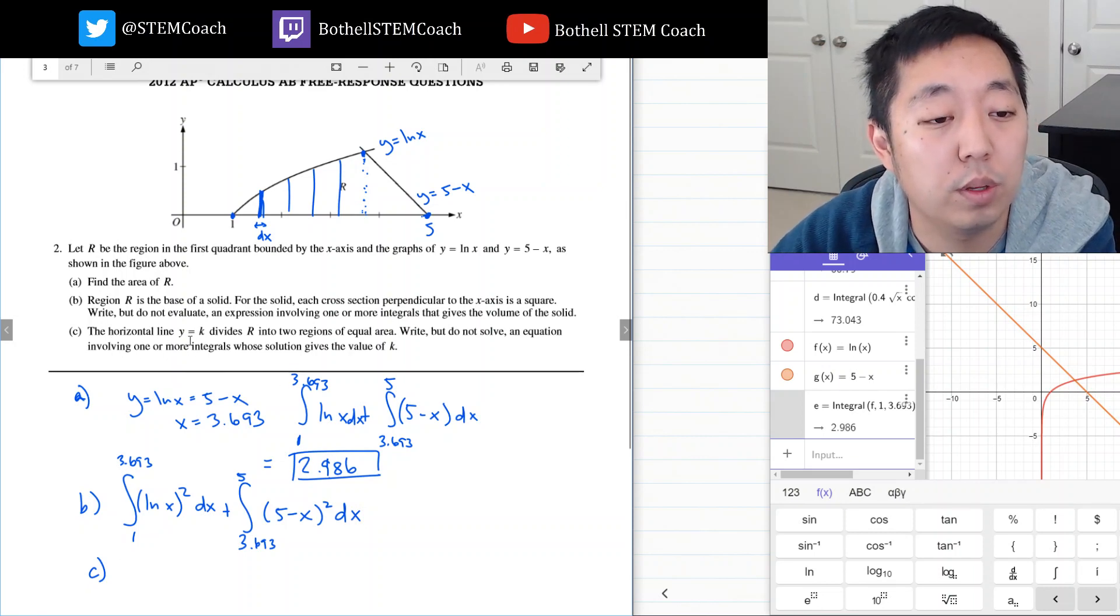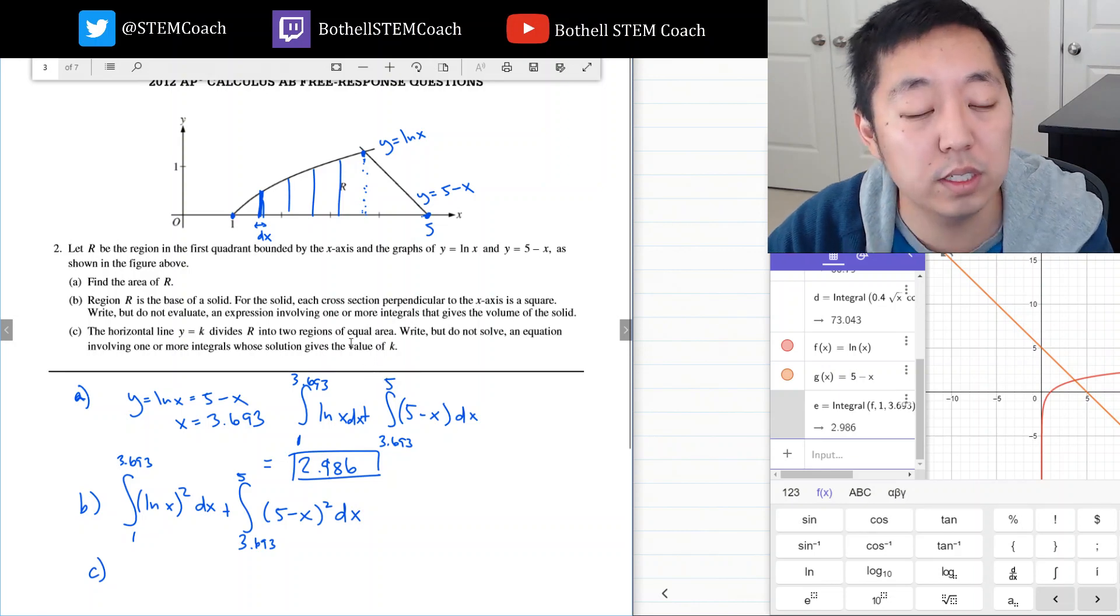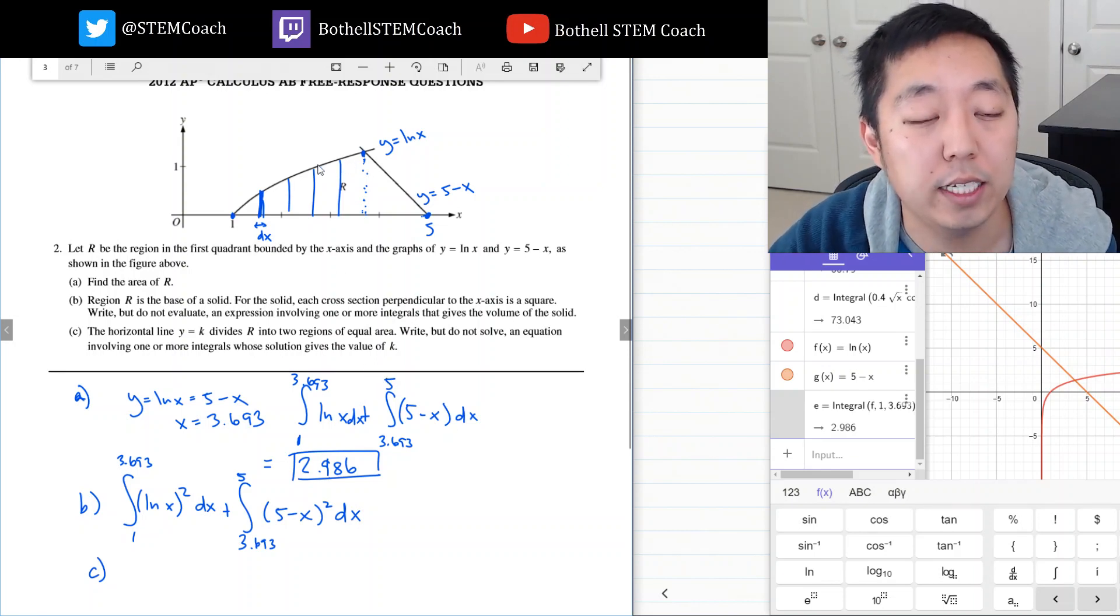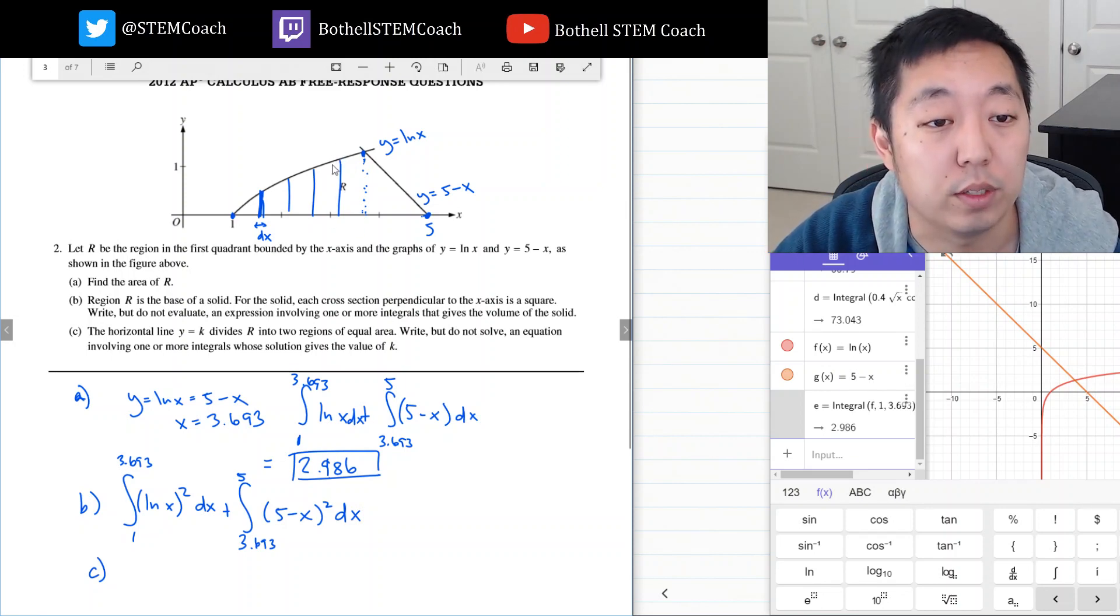Part c: The horizontal line y equals k divides r into two regions of equal area. Write but do not solve an equation involving one or more integrals whose solution gives the value of k. This is a little bit tricky because I need to know if k is to the left or to the right. So I kind of want to look at the areas of the two. I suspect k is over here somewhere, but it's always good to check.